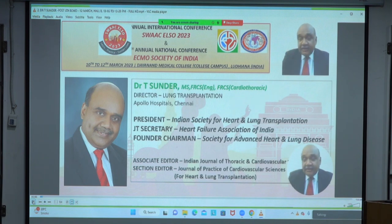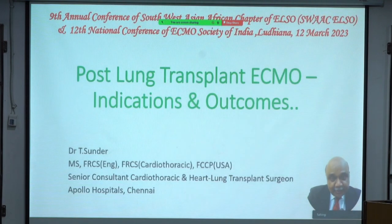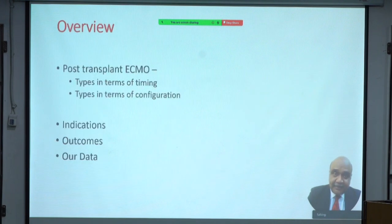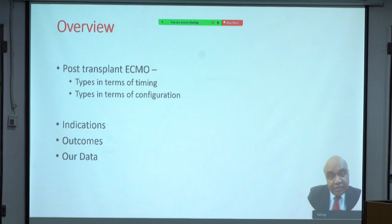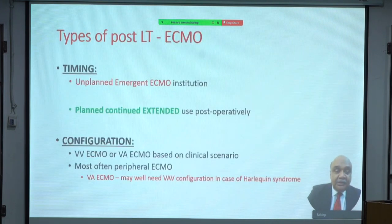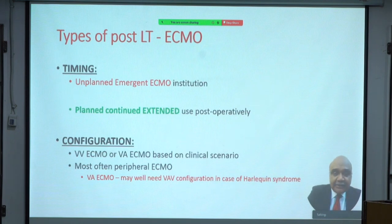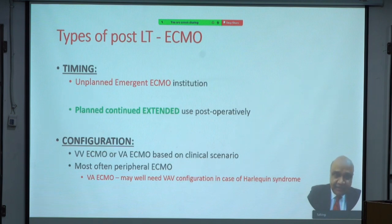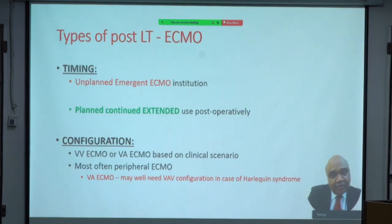I would like to thank the organizers for inviting me to give this talk on Post Lung Transplant ECMO — the indications and the outcomes. I will talk about the types of post-lung transplant ECMO in terms of timing of institution and configuration of the ECMO circuit, discuss indications and outcomes, and briefly discuss our data. Based on timing, there are two categories: the more common unplanned emergent institution of ECMO due to graft failure — most often primary graft dysfunction — and the planned continuation of intraoperative ECMO into the postoperative period, a technique described by the Hannover group mainly in cases of idiopathic pulmonary hypertension.